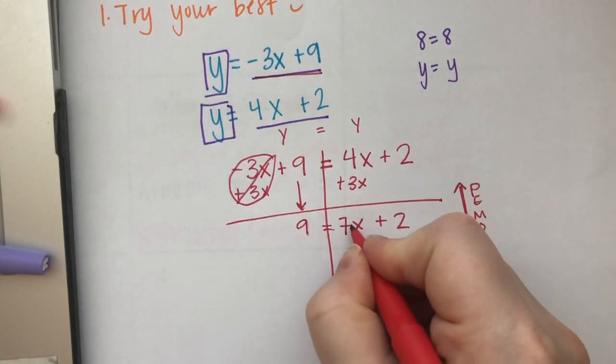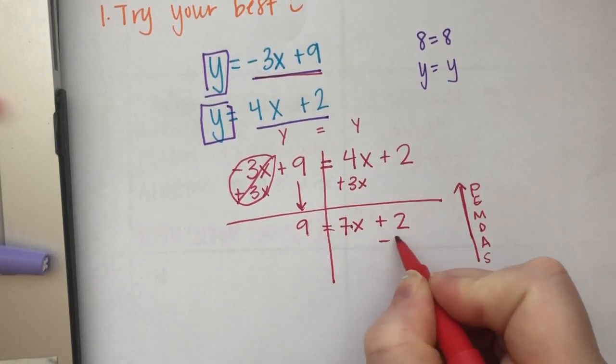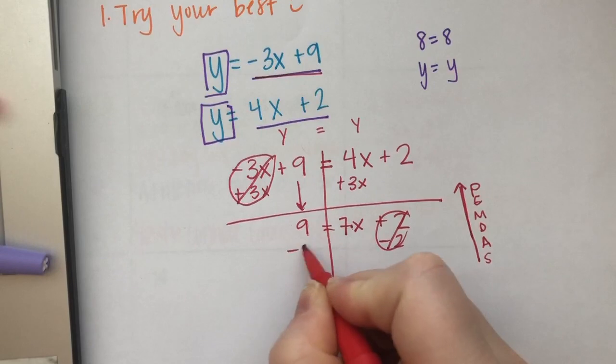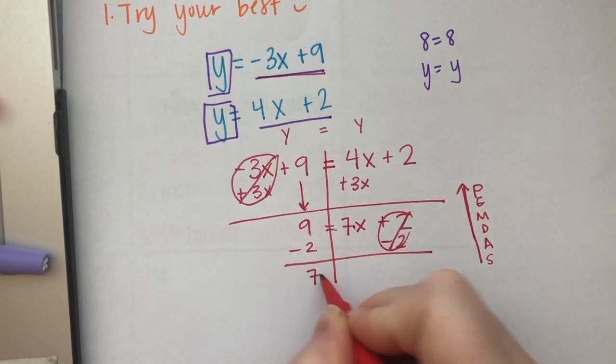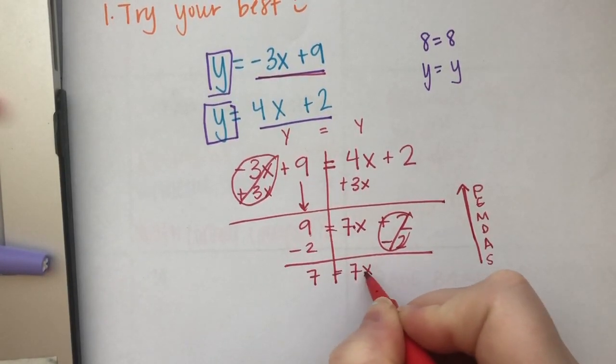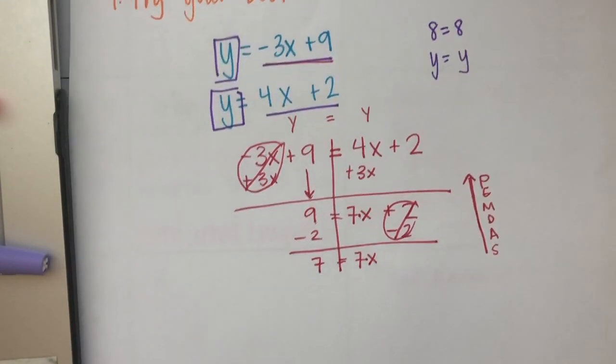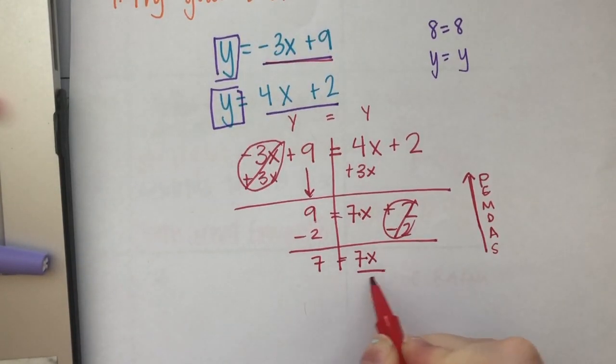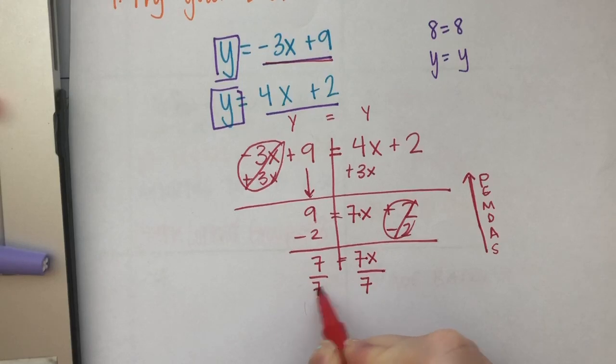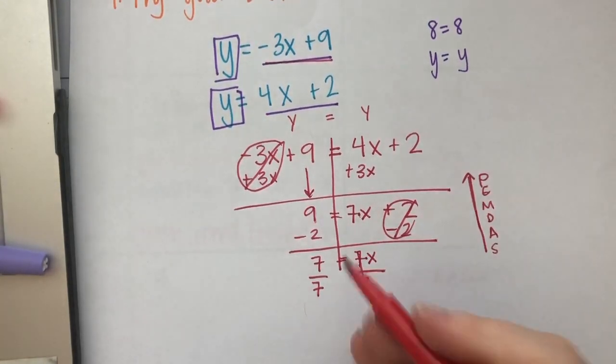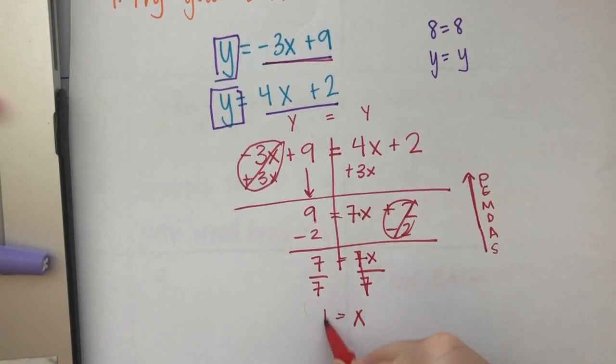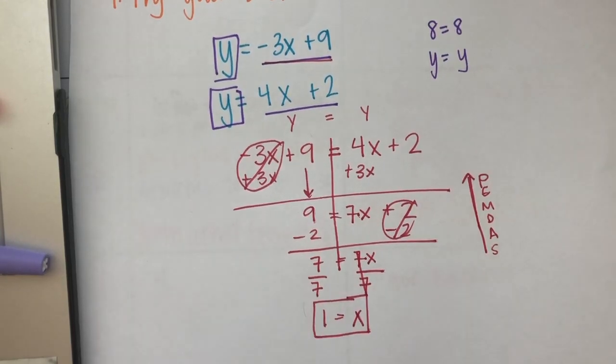So you have this multiplication of the 7 and addition of 2, so minus 2, minus 2. So 9 minus 2 is 7. We have 7 equals 7x. These are multiplied together. The way I get rid of multiplication is division. So we're going to divide by 7. Divide by 7. 7 divided by 7 is 1. So we know x equals 1.